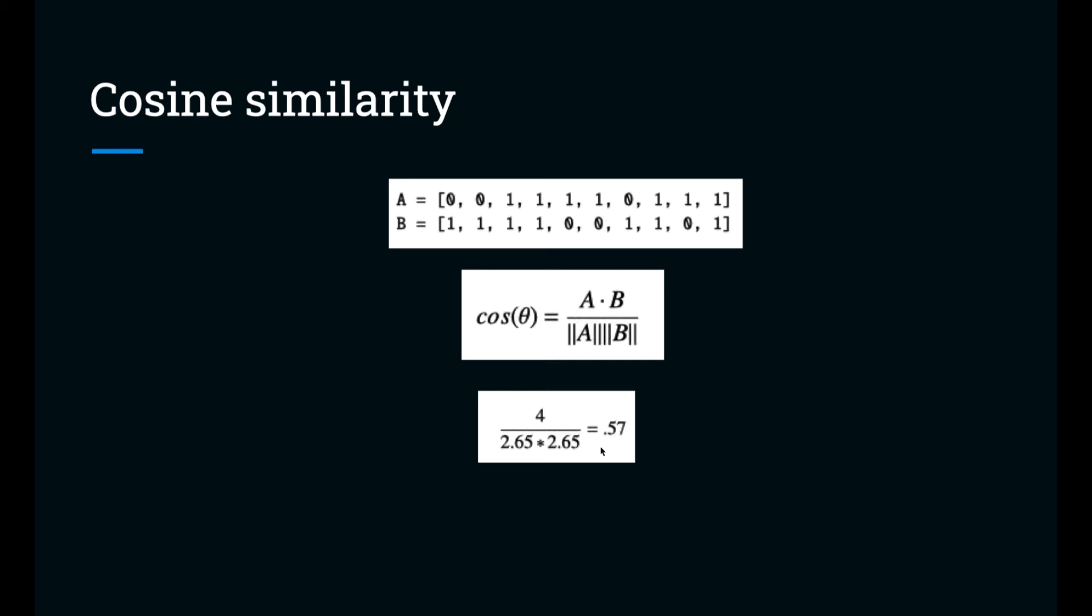So the two vectors are slightly more alike than they are not alike. They're somewhat similar. And this brings up a good question. What is a reasonable cutoff point for deciding that two documents are similar?